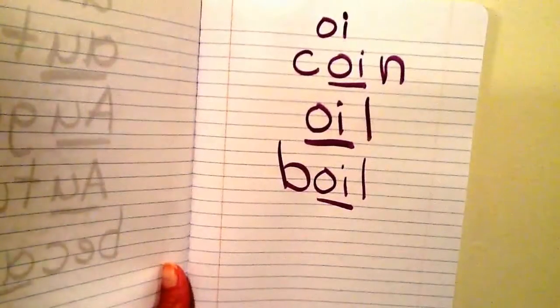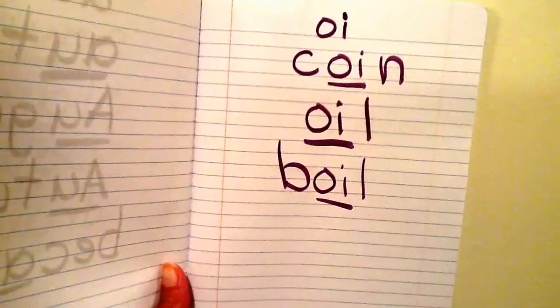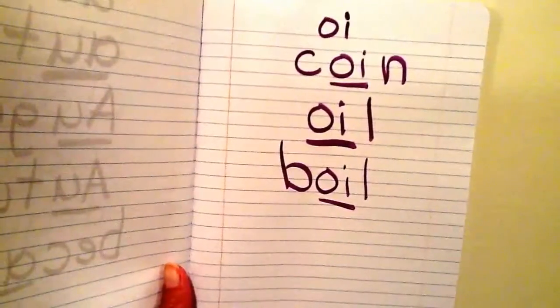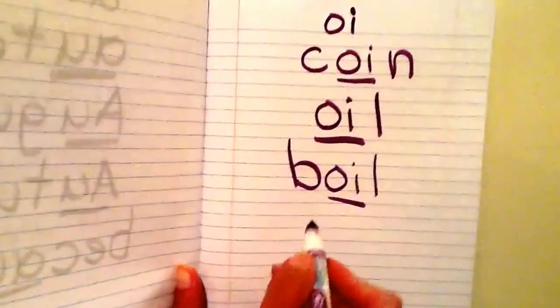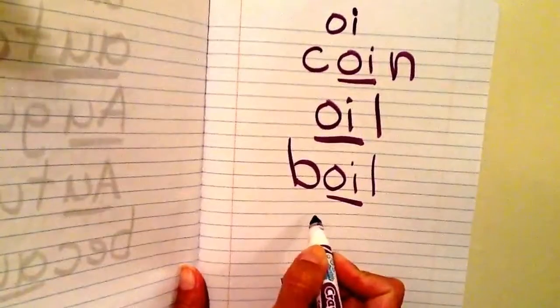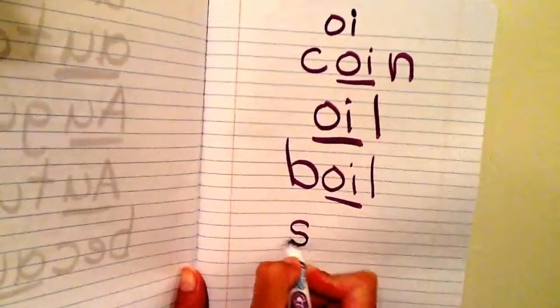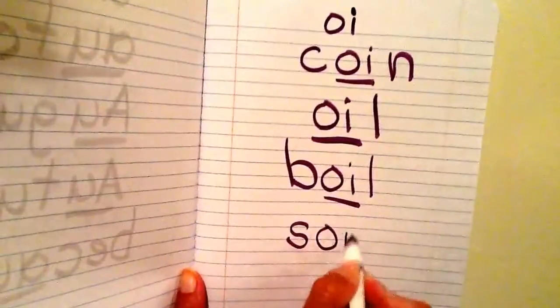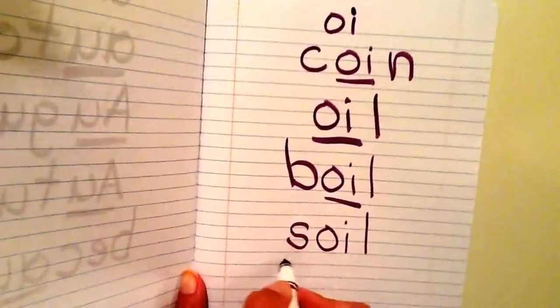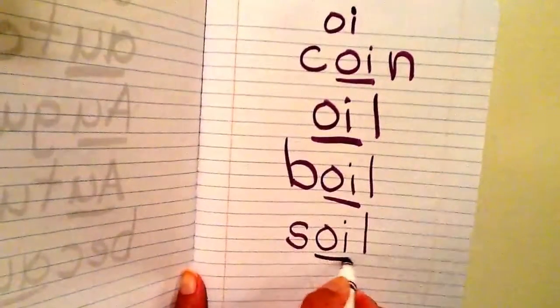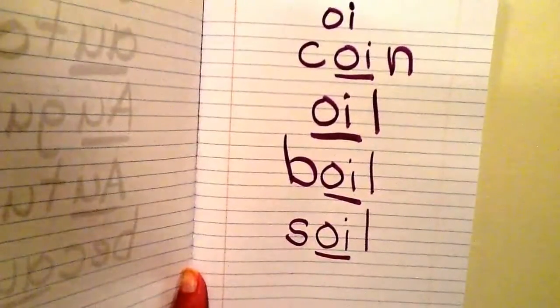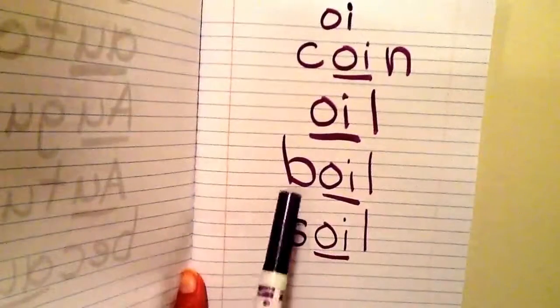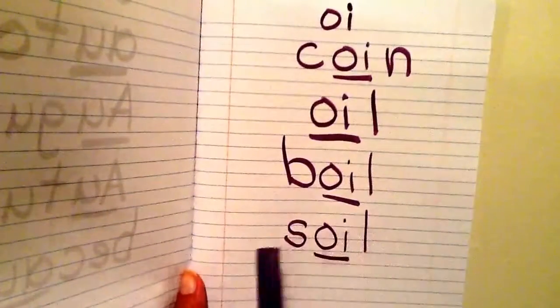And the last word that we're going to write that has oy in it written as OI is the word soil. And that's another word for dirt. As a writer I'm going to say that slowly and I hear ss and then I hear oy, so I'm going to write it as O I and then L soil. And then I'm going to underline O I. Please write soil in your word study notebook as S O I L soil.